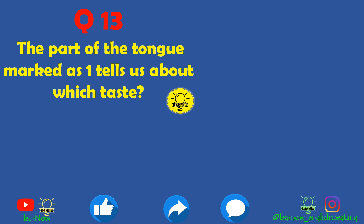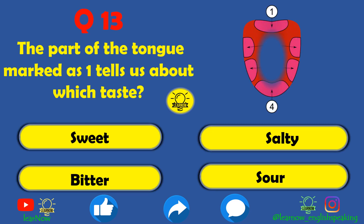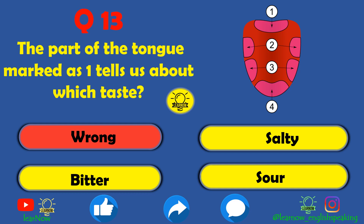Next question: the part of the tongue marked as one tells us about which taste? Sweet is wrong, salty is also wrong. The part marked as one — the hind part of the tongue — tells us about the bitter taste.